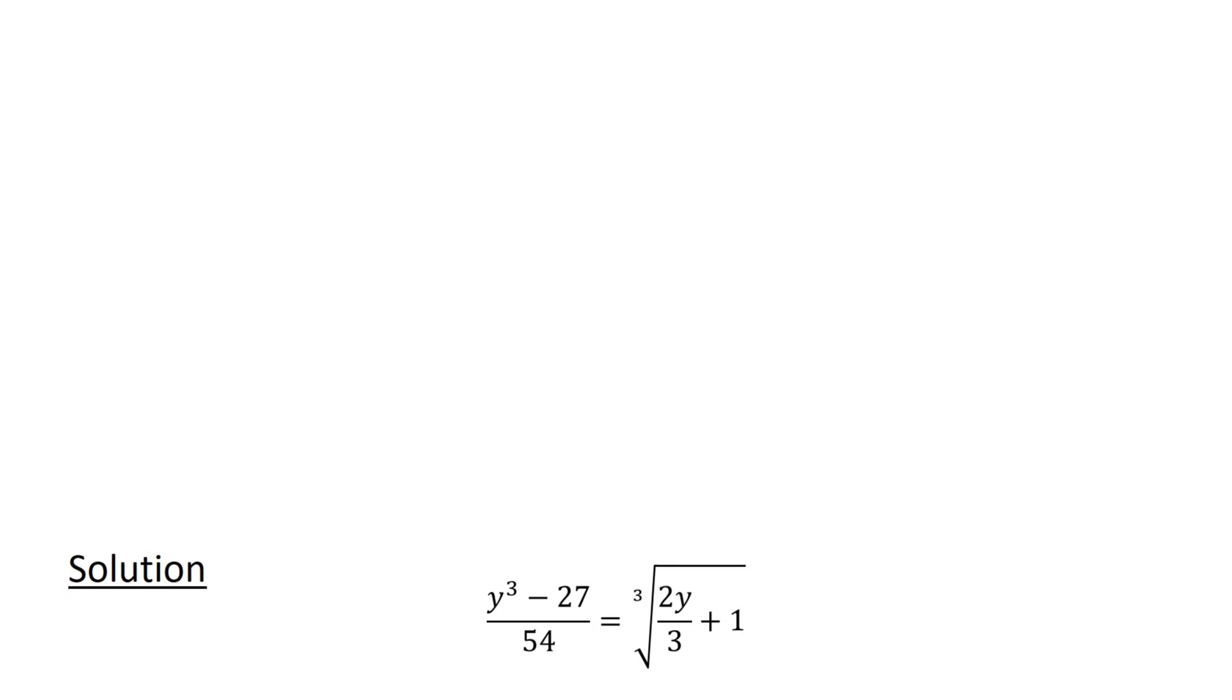And now for the solution. First, we multiply both sides by 54 to obtain y cubed minus 27 equals 54 times cube root of 2y over 3 plus 1.